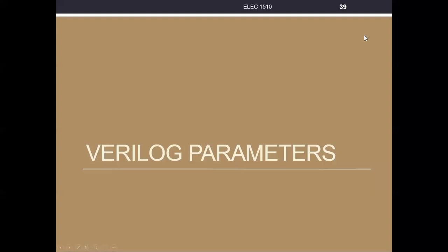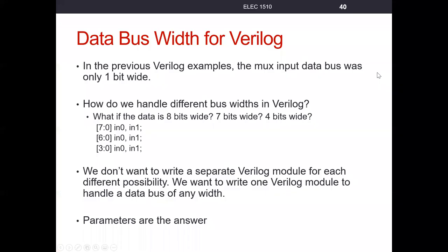Let's continue on part four of our series on multiplexers by talking about Verilog parameters. In the previous tutorial, we schematically drew a two-to-one multiplexer that had a bus width of four bits wide. We want to see how we would handle that in Verilog.